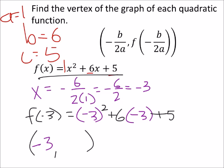And then plus 5. So this is going to be 9 minus 18 plus 5, which I get to be negative 4, and that would be my y value. And that's it.